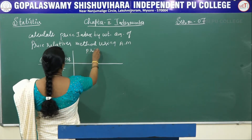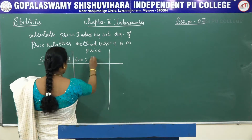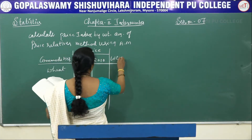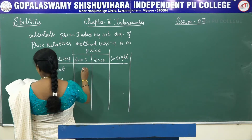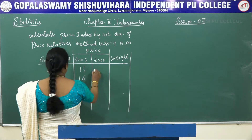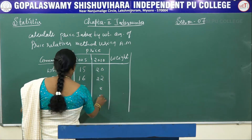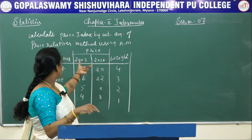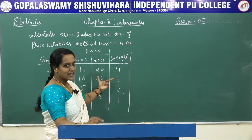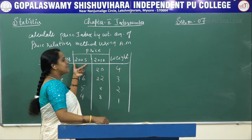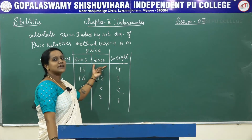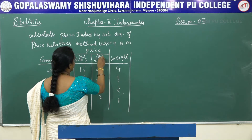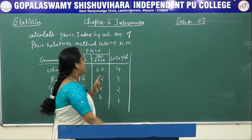The data includes prices of 2005 and price of 2010, and they have given weights. In this problem they have given price of 2005 and 2010 and the weights showing how much they have taken. The price of 2005 we will consider as base year and price of 2010 we consider as current year. So I will denote price of 2005 as P0 and price of 2010 as P1, and this weight I denote by W.